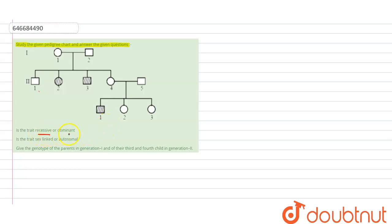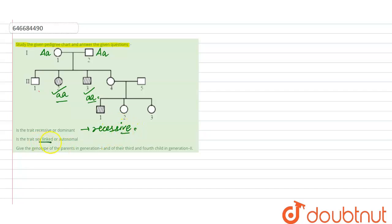The trait is shown by the affected individuals while the parents are normal — capital A small a, capital A small a — meaning this trait has to be recessive. It was hidden in one generation and expressed in the next, making it a recessive type of disorder. Since it does not show crisscross inheritance, it should be an autosomal disorder.